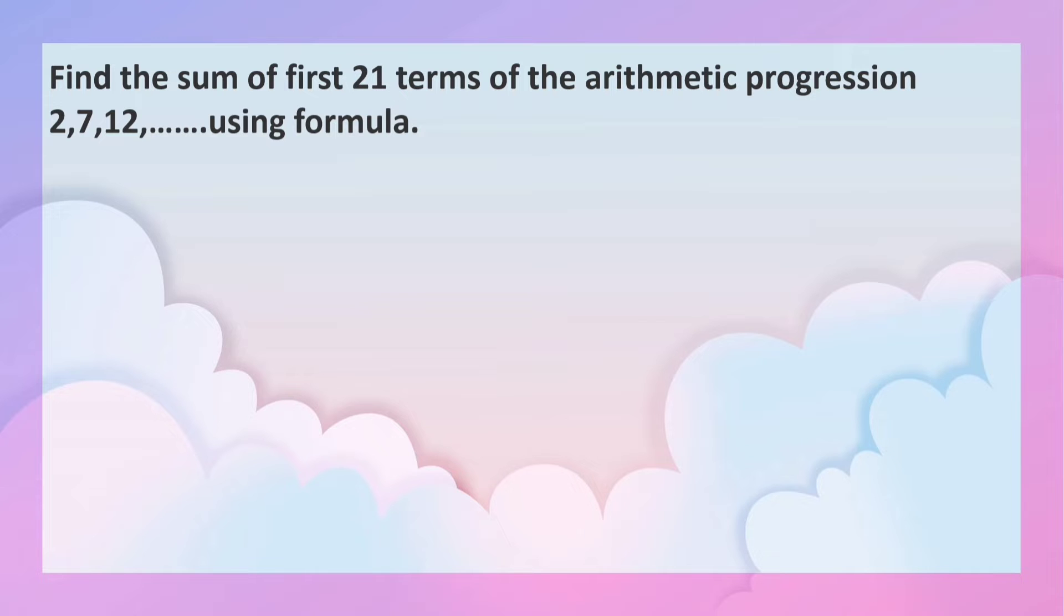Here we have to find the sum of the arithmetic progression by using formula. What is the formula? S_n is equal to n by 2 into 2a plus n minus 1 into d.